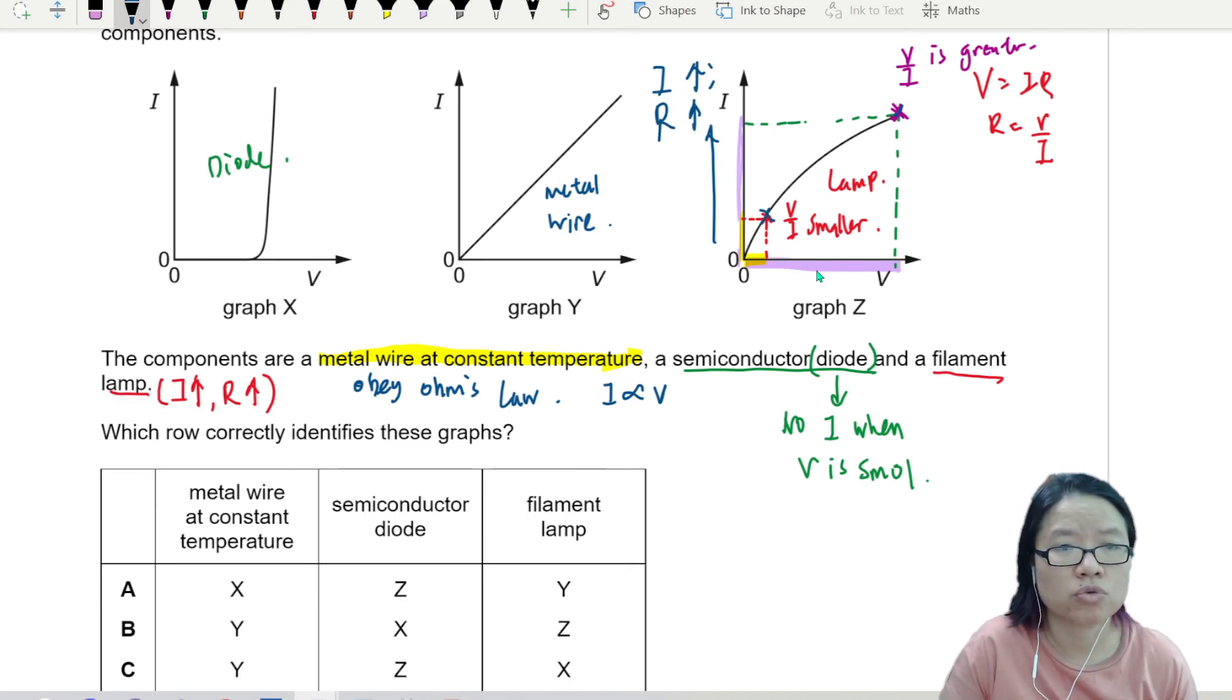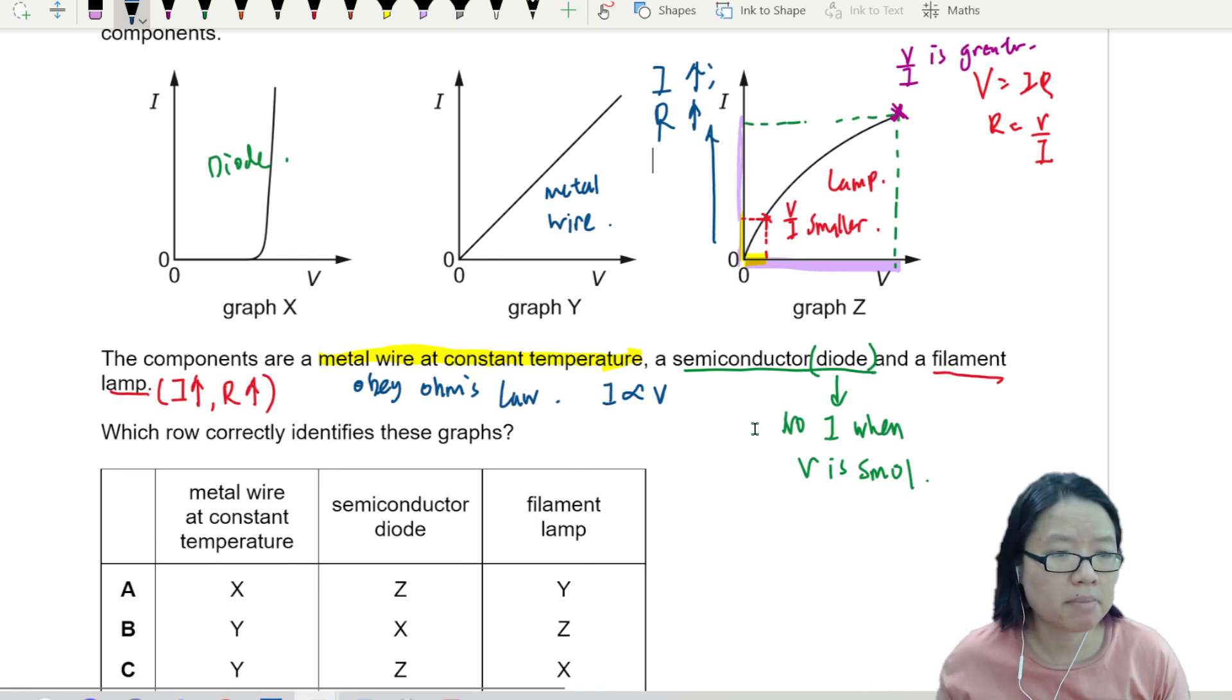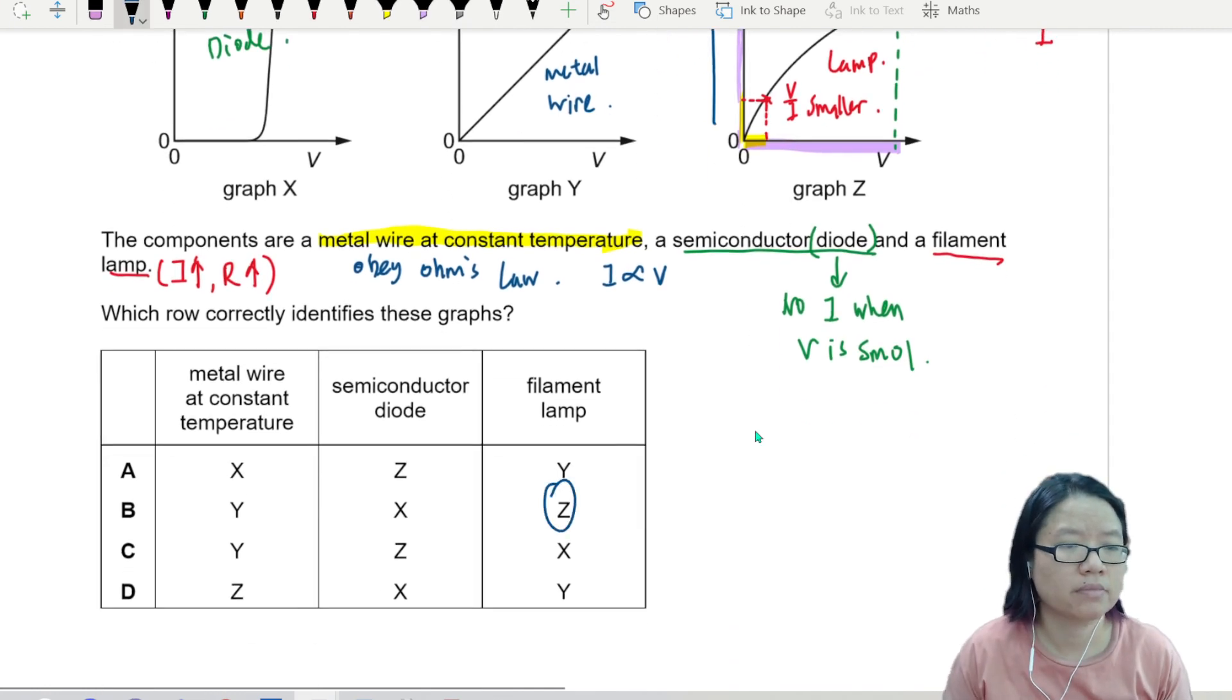So from here to here, we already have the values. Now it's just matching it. Lamp is Z. So the answer is C.